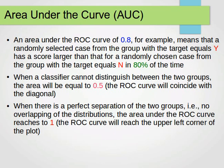So, more on the AUC, more on the area under the curve. An area under the curve of 0.8, for example, means that a randomly selected case from the group with the target equals yes, has a score larger than that for a randomly chosen case from the group with the target equals no in 80% of the time. This is how we interpret the area under the curve. I'll read it again.